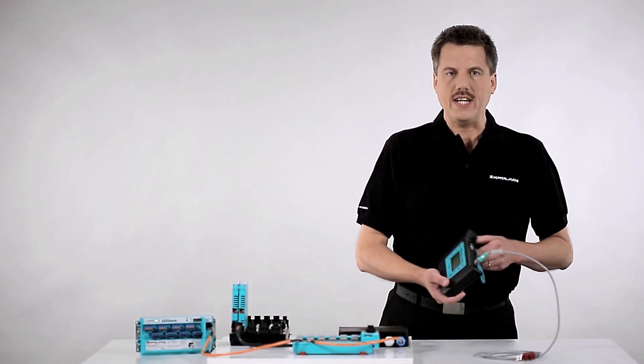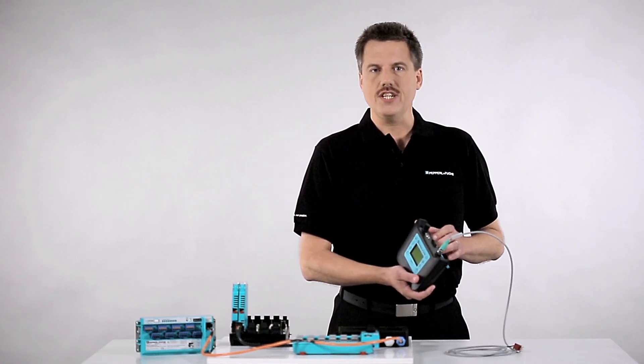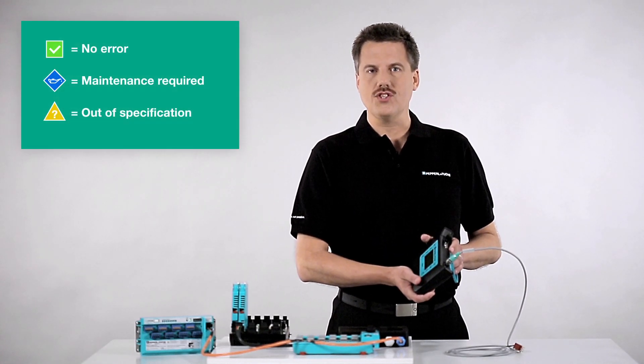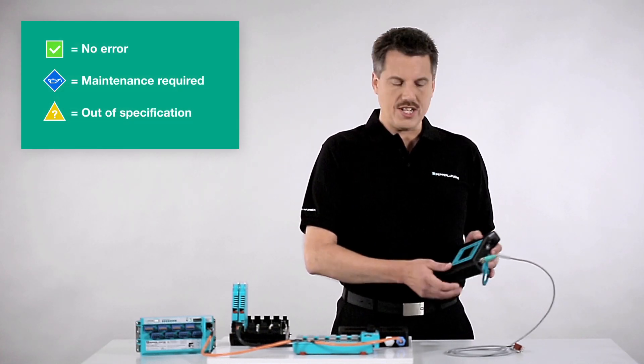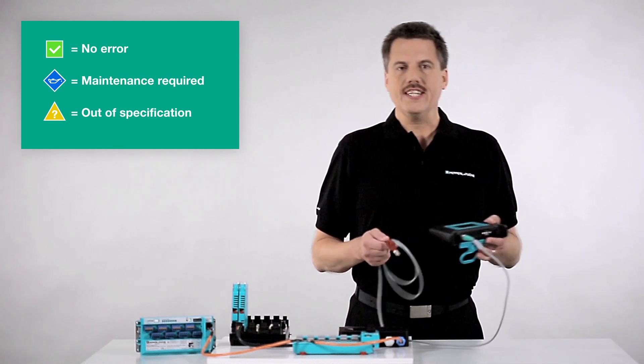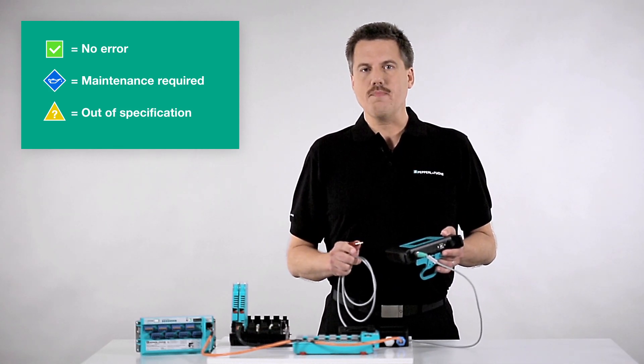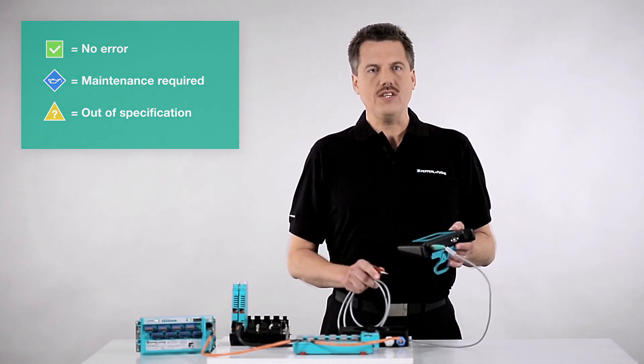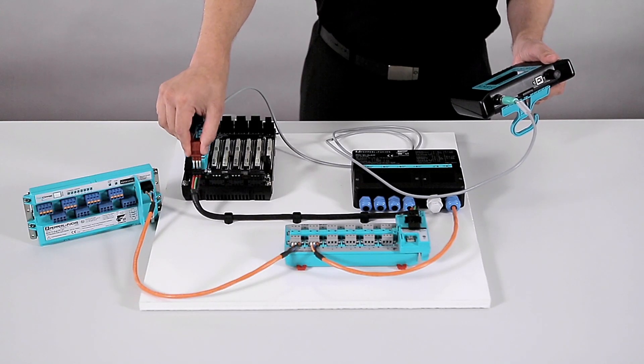The FDH1 rates the quality of our installation in accordance with NAMUR recommendation NU107. So let's check it out. We can connect the FDH1 at any point of the segment and the easiest way to do so is here at the power supply.